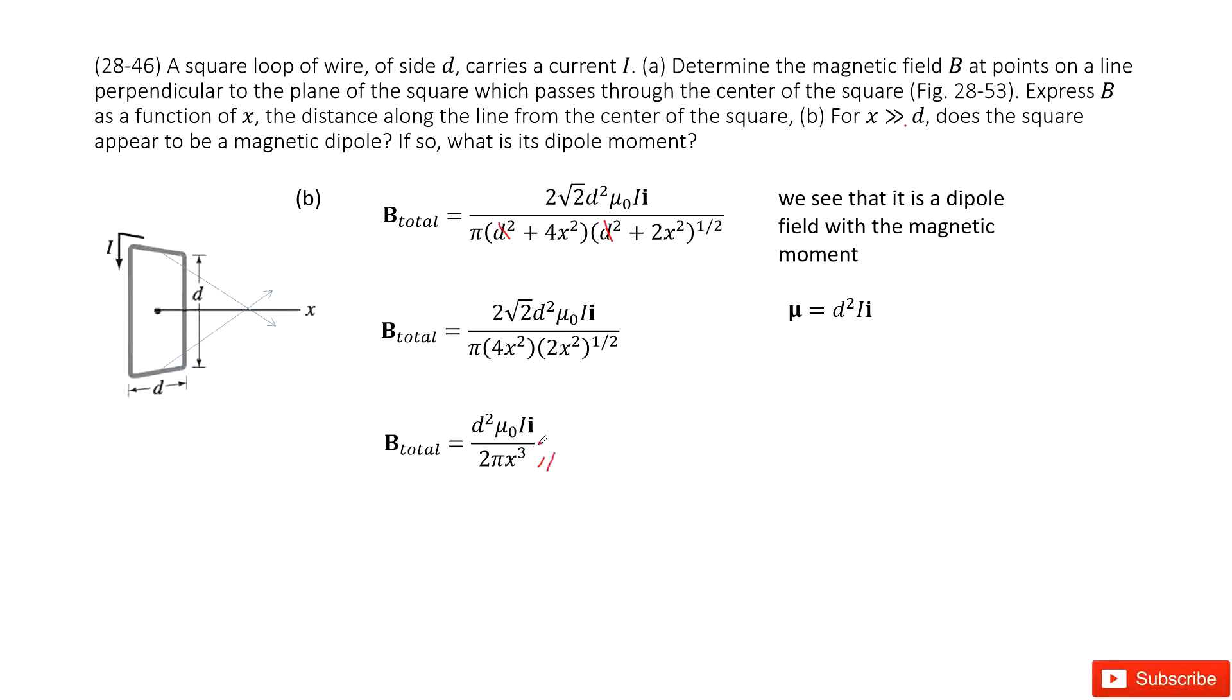This is just the magnetic field for a magnetic dipole. We can consider d squared times I as the magnetic dipole moment. So this is a dipole. Thank you.